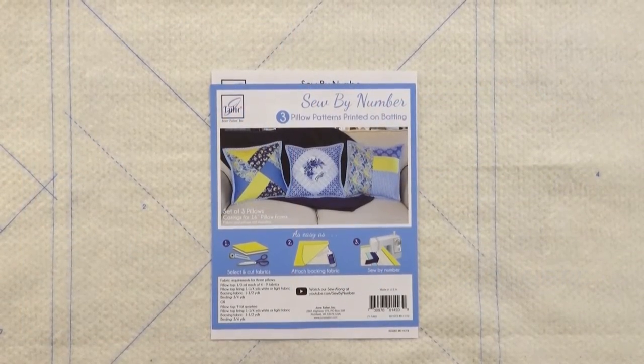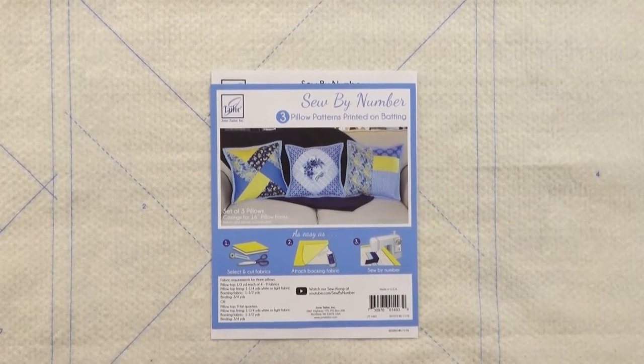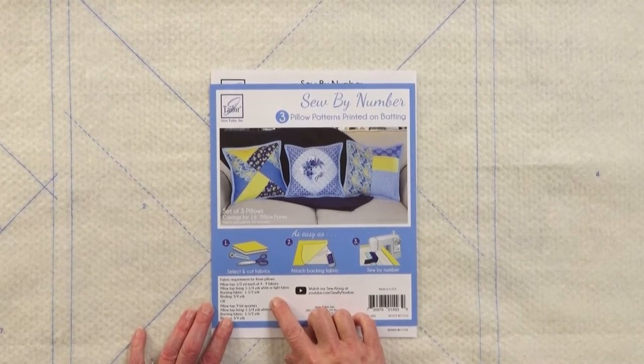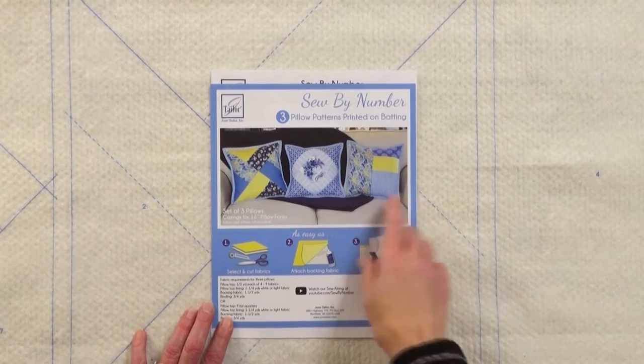Thank you for purchasing the June Taylor sew by number pillow patterns printed on batting. In the package you will find the packaging card. Here it specifies the amount of fabric you need to purchase in order to create the three different pillow patterns that are printed.